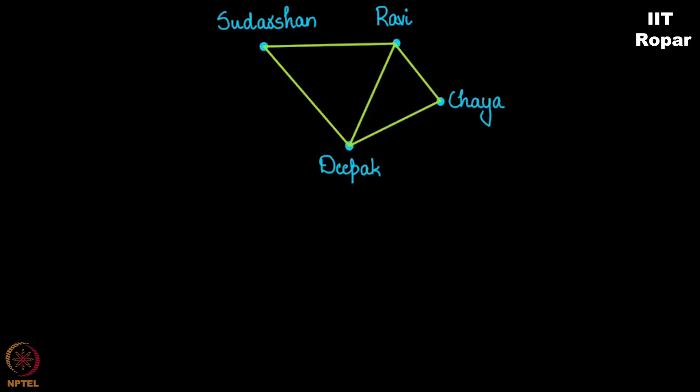Do you see? I have represented the friendships between these four people by points and lines. This is what we call a graph.